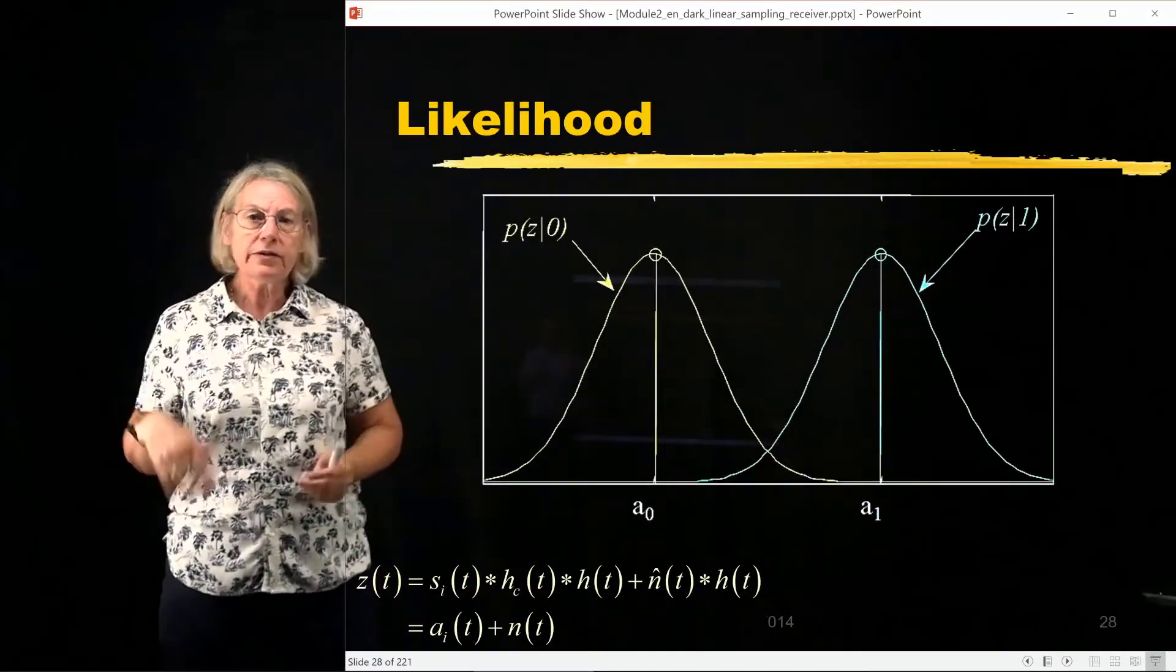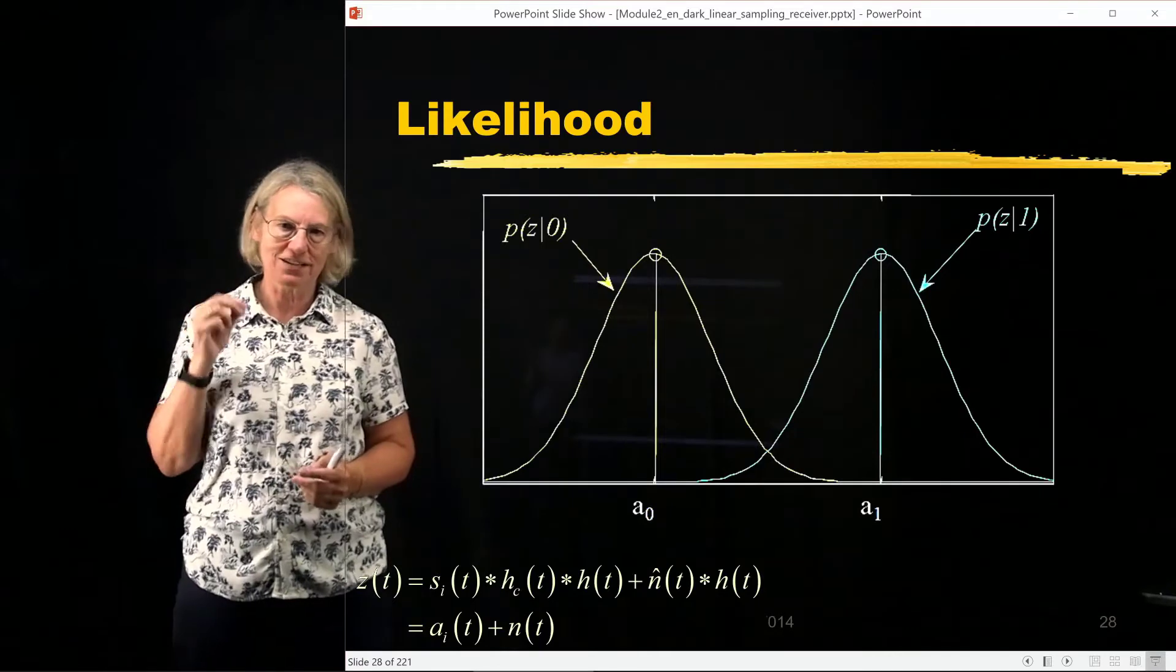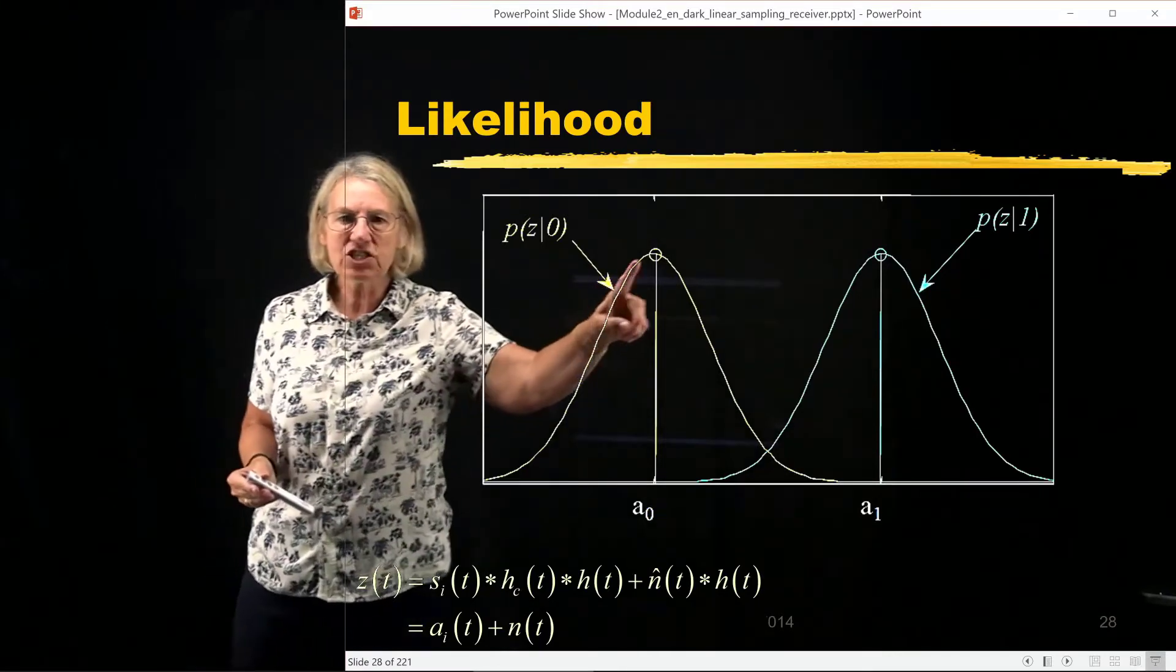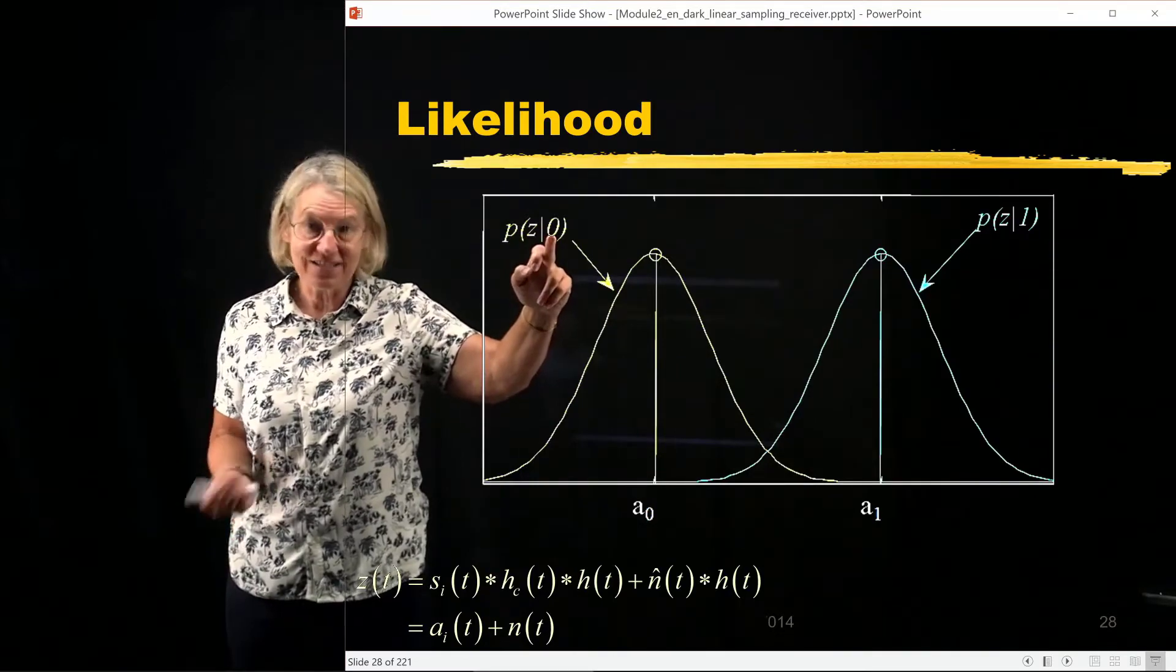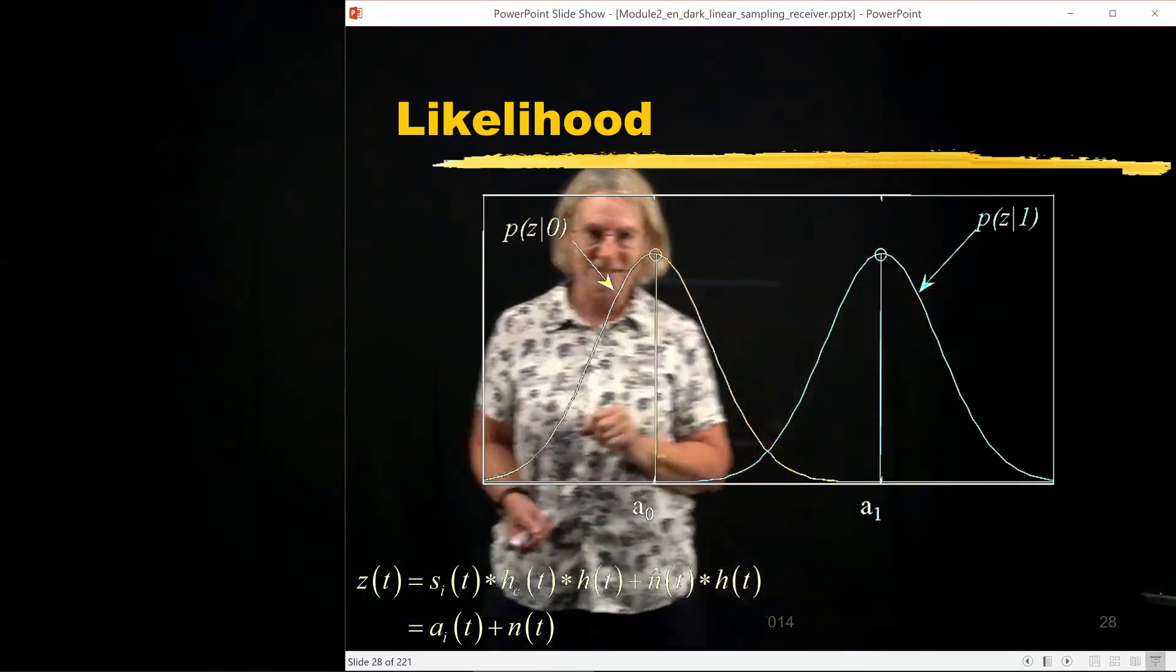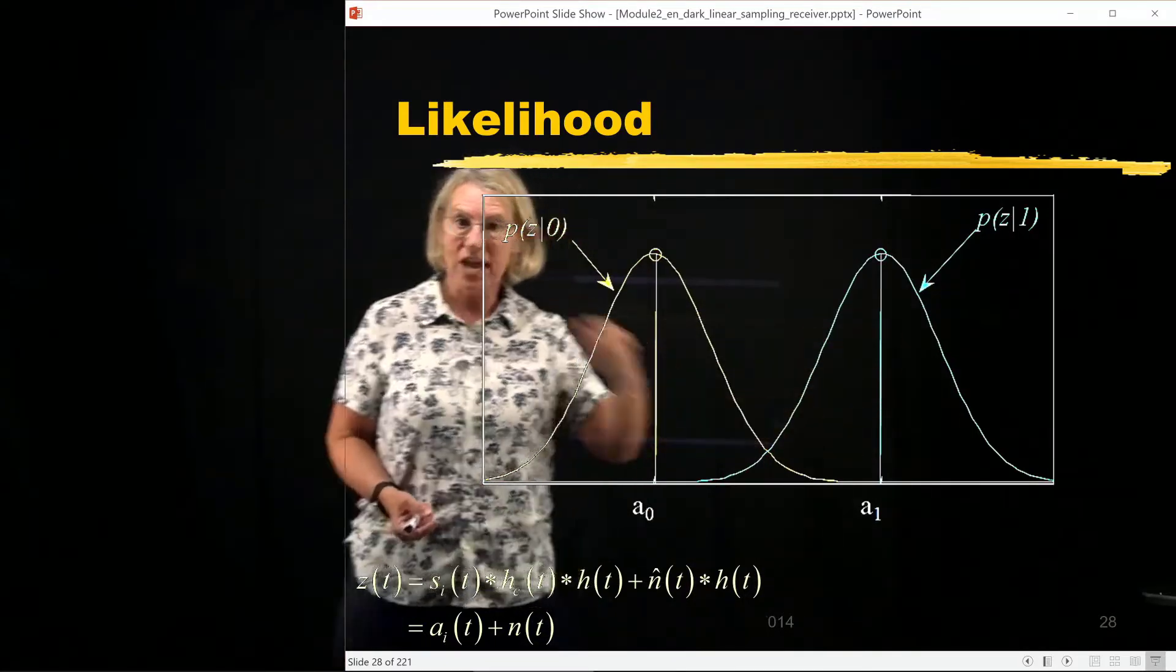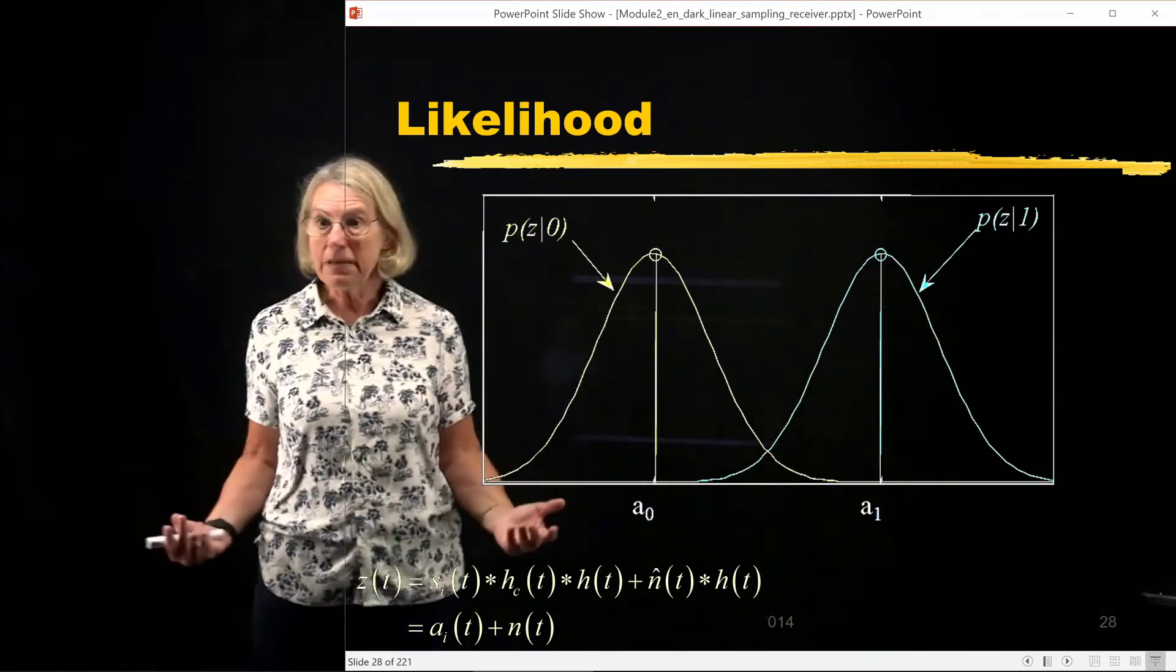So now what I'm going to do is I'm going to plot the two density functions, the two conditional density functions. Here is the conditional density when the condition on a₀ being sent. And here is the density conditioned on a₁ being sent. So they're both Gaussian. So we see the typical Gaussian shape in these two probability density functions.